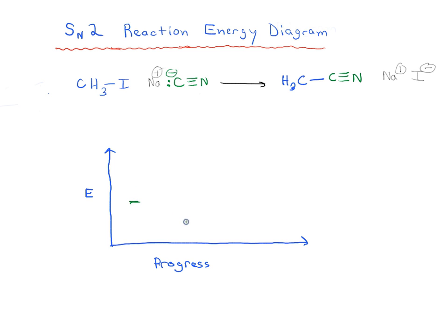So let's start over here. Let's say this is the energy of our starting material, and our starting materials are CH3I and we have a CN, C triple bond N.